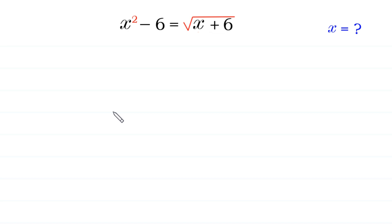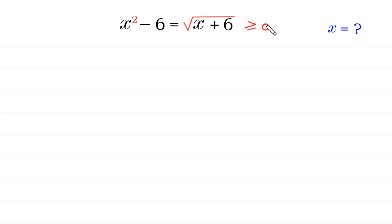Welcome to how to solve this radical equation. The equation is x squared minus 6 is equal to square root of x plus 6. Since this radical expression square root of x plus 6 is greater than or equal to 0, this expression x squared minus 6 must be greater than or equal to 0.